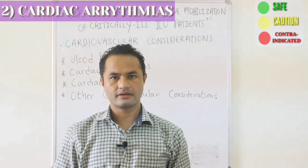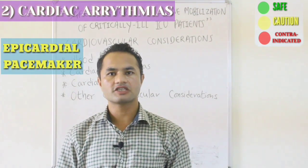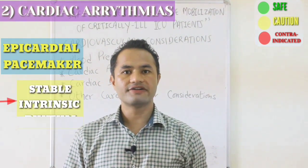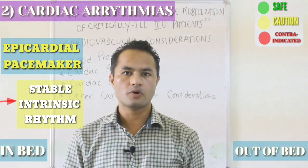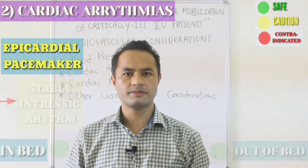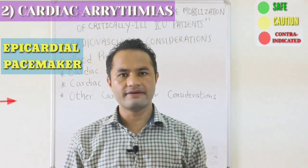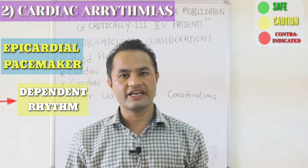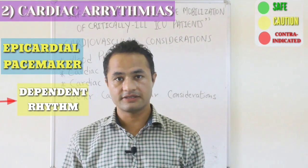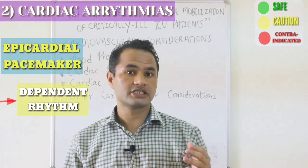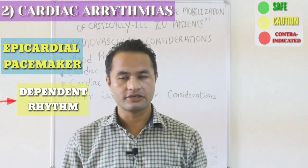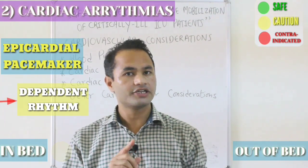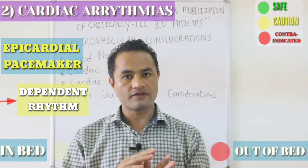The last parameter under cardiac arrhythmias is the presence of a transvenous or epicardial pacemaker. If a patient on a pacemaker has a stable intrinsic rhythm, they can be mobilized safely within and out of bed. However, patients with a dependent rhythm — entirely dependent on pacemaker activity — may develop significant symptoms or cardiac arrest if pacemaker activity is disrupted, so they should be mobilized within the bed under supervision only and not out of bed at all.